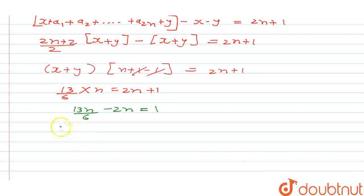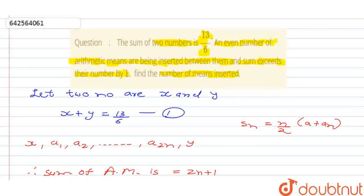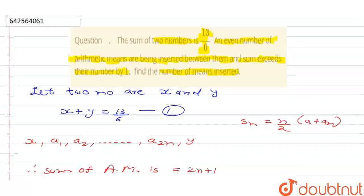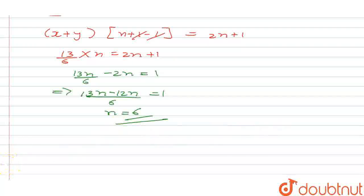Which implies we will take the LCM. Therefore this implies 13n minus 12n upon 6 is equal to 1. So this is n by 6 is equal to 1, n is equal to 6. So we have found the number, that is number of even terms inserted is 6. So number of means that is inserted is 6. I hope you understand the solution. Thank you.